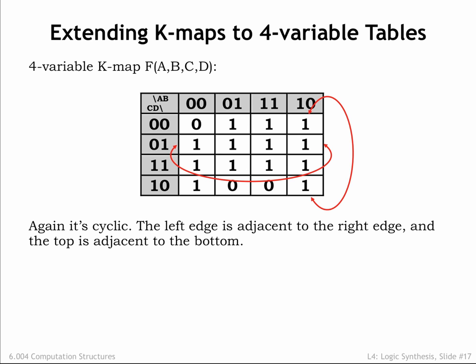It's easy to extend the K-map notation to truth tables for functions with four inputs, as shown here. We've used a gray code sequencing for the rows as well as the columns. As before, the leftmost and rightmost columns are adjacent, as are the top and bottom rows.